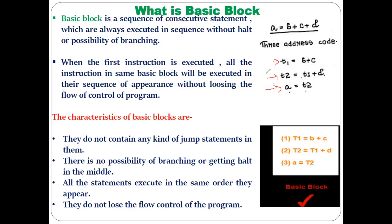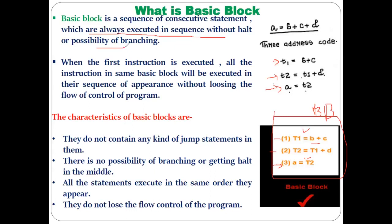So: t1 = b + c, t2 = t1 + d, a = t2 — these are continuous statements with no jumping. After the first comes the second, after the second comes the third — no branching, no jumping. That is why this set of consecutive statements is referred to as a basic block. When the first instruction executes, all instructions in the same basic block execute in their sequence of appearance without losing flow of control.